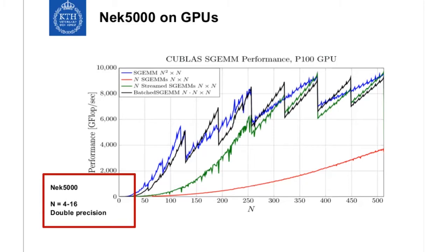Looking at the SGEMM performance chart for the P100, where NEC 5000 sits when considered per-element — you're basically down in the lower left corner, and you cannot achieve good performance. You basically have to do something different with this matrix-matrix multiplication.